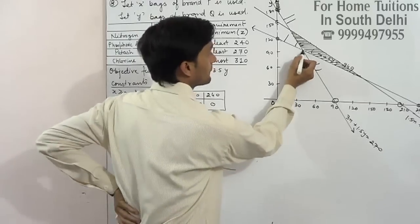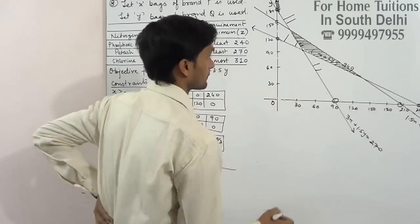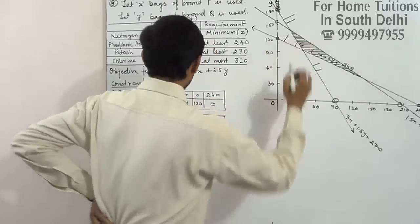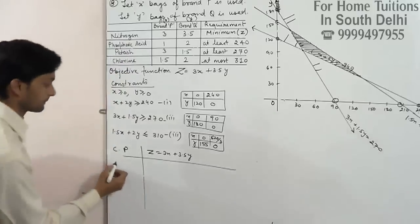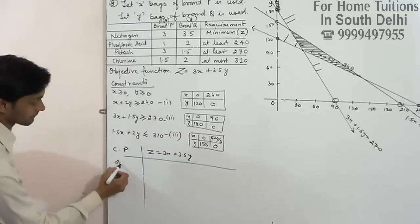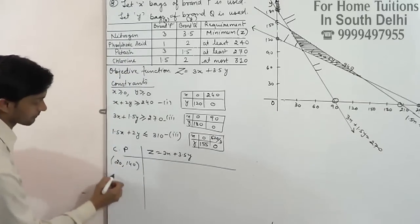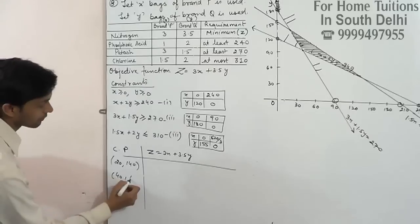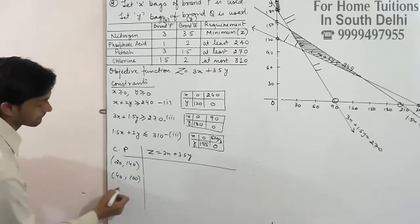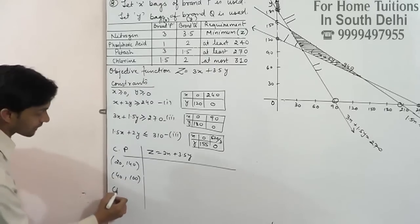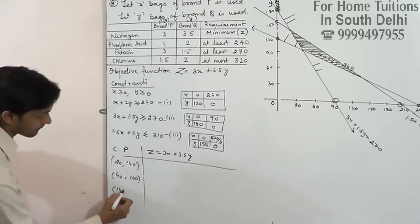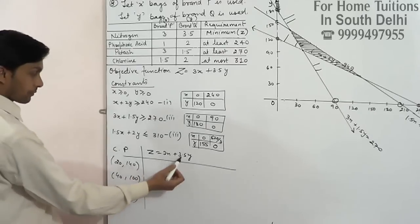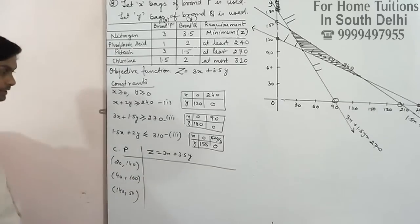This is 400. This is 400. This is 400. 400. And 140, 50. 140, 50. This is what we put. What is wrong?